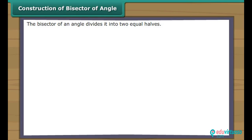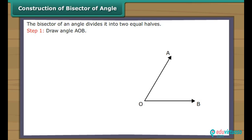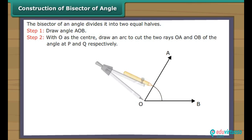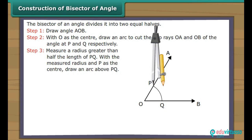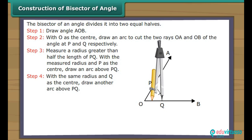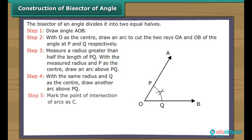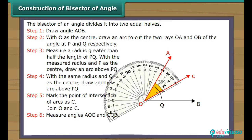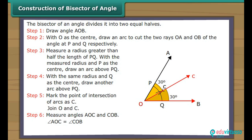Construction of bisector of an angle. The bisector of an angle divides it into two equal halves. Draw angle AOB. With O as the centre, draw an arc to cut the two rays OA and OB at P and Q respectively. Measure a radius greater than half the length of PQ. With P as the centre, draw an arc above PQ. With the same radius and Q as the centre, draw another arc above PQ. Mark the point of intersection as C. Join O and C. Angle AOC is equal to angle COB. Therefore, OC is the bisector of angle AOB.